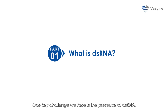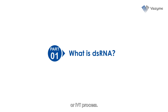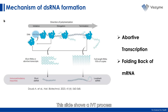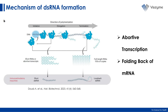One key challenge we face is the presence of dsRNA, which can form during the in-vitro transcription, or IVT, process. This slide shows an IVT process, which includes three main stages: initiation, elongation, and termination. However, unexpected events can lead to the production of dsRNA.